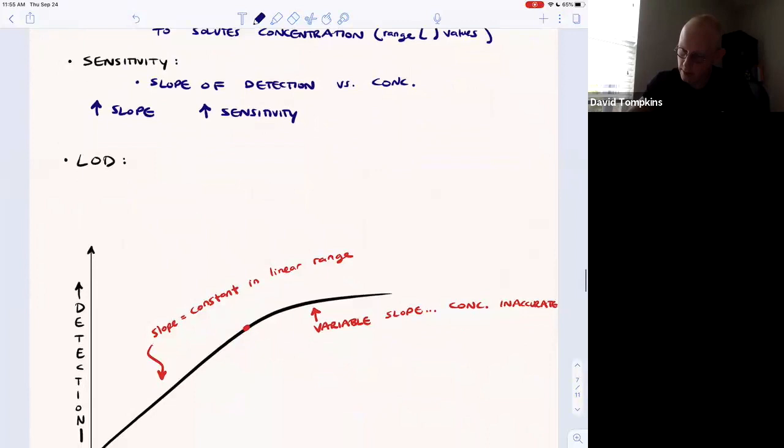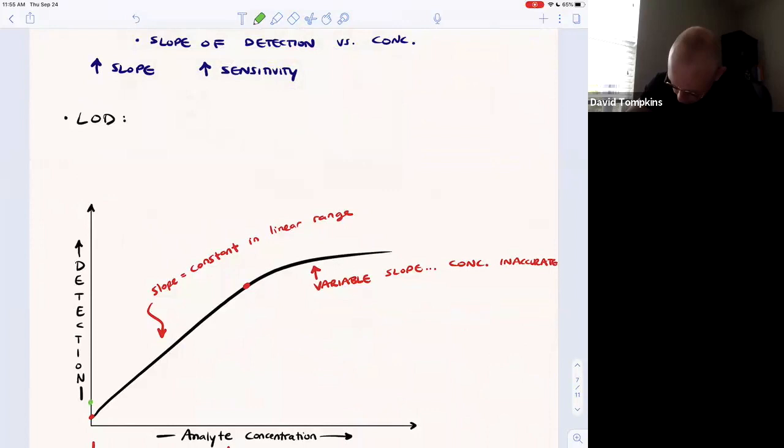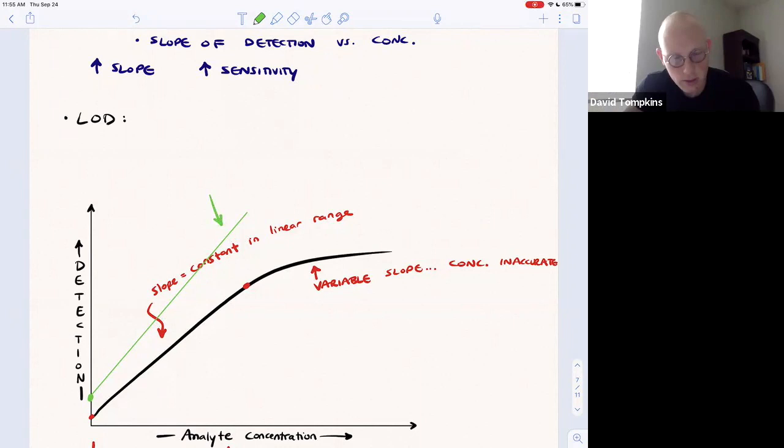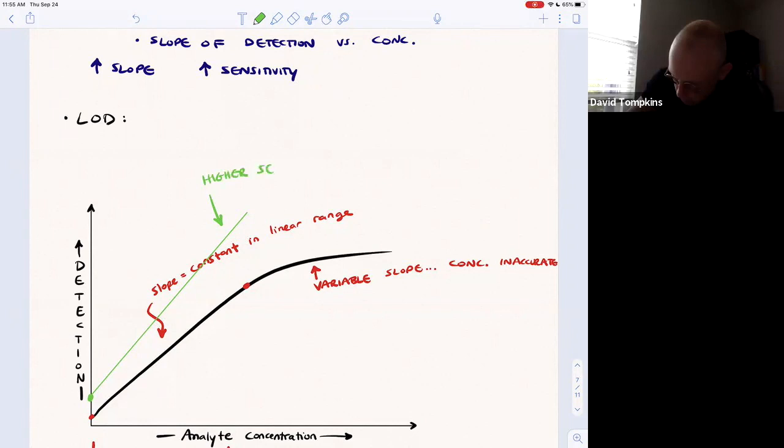For example, if you had another detector or another analyte, you would expect that this detector has a higher sensitivity than the one that I drew first because it has a higher rise over run or greater slope.